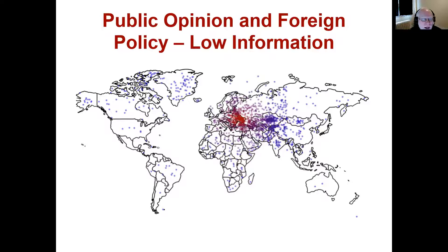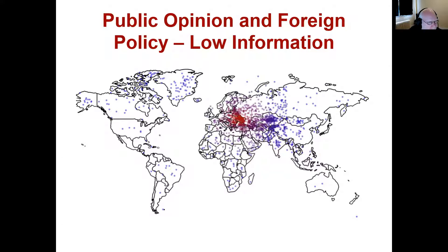A lot of people did quite well, but there are also a lot of dots that are not particularly close to where Ukraine would be located. There's quite a clustering of them in Greenland, and some in Canada. So certainly some respondents in the US thought Ukraine was located within Canada. Particularly depressing would be that actually several people — not many, but at least a few — located Ukraine within the United States. So not only were those respondents unable to identify where Ukraine was, they couldn't even identify where their own country was on the map.